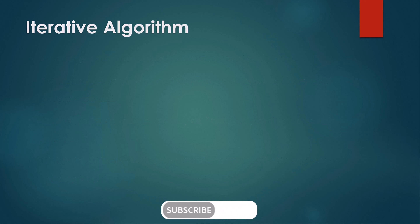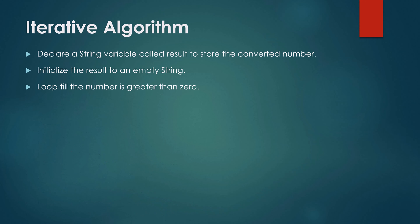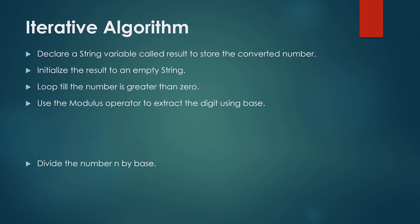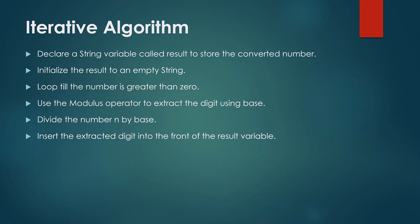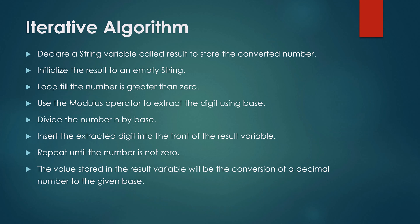Iterative algorithm. I am going to implement this conversion using two different algorithms — iterative and recursive. Steps in the iterative algorithm: declare a string variable called result to store the converted number and initialize it to an empty string. Loop till the number is greater than 0. Use the modulus operator to extract the digit using base — this base can be any number between 2 and 36. Divide the number by the base. Insert the extracted digit into the front of the result variable. Repeat until the number is not 0. The value stored in the result variable will be the conversion of the decimal number into the given base between 2 to 36.